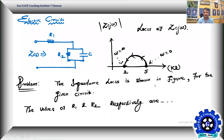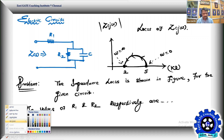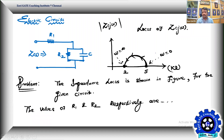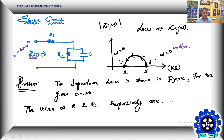The locus of the impedance of the given network as omega takes values from zero to infinity — that is zero radian per second to infinity radian per second. We are varying the frequency of the supply from zero to infinity and observing what happens to the impedance of the given circuit.